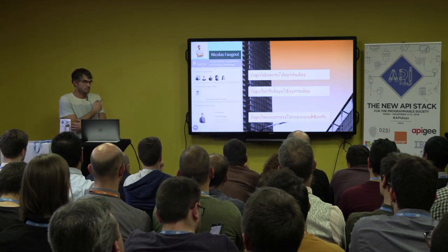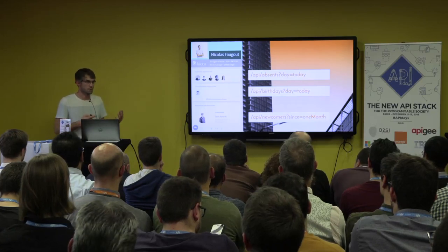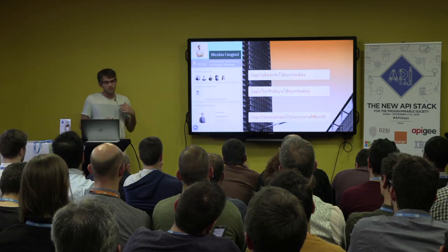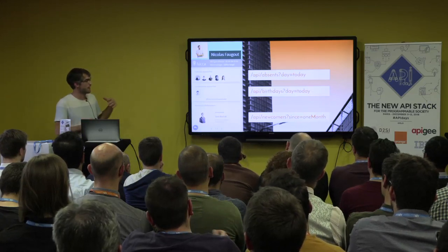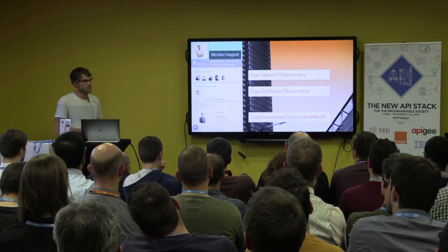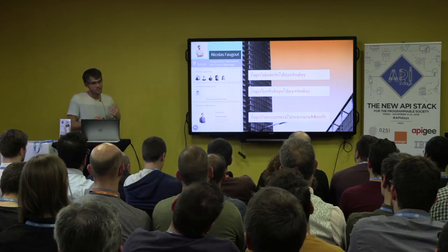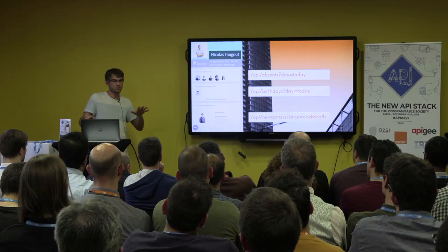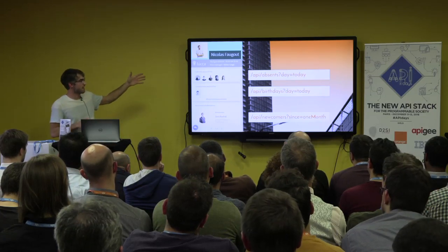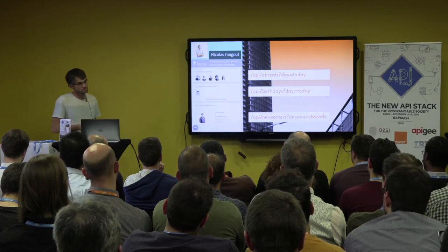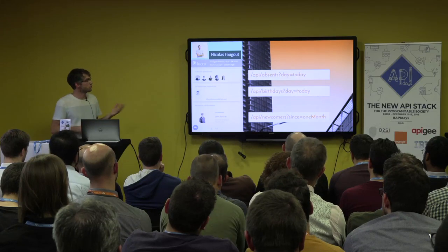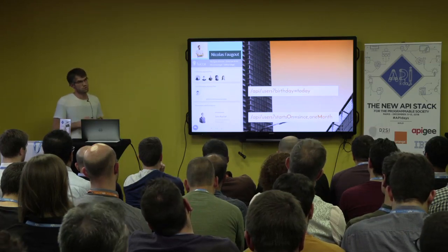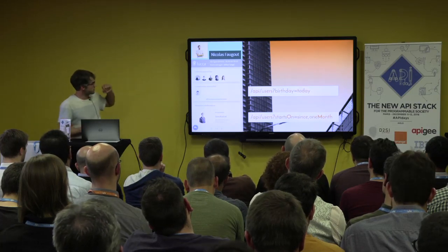These APIs are composite because they hide the concept of an employee or user — depending on your ubiquitous language. With three APIs like this, you can personalize each, optimize, and make use of HTTP caching since this information won't change during the day. But there is something more important: architecture, good design, and security. What if your company is split into two legal entities and people cannot see each other? Will the developer of these APIs handle that? We don't know. The equivalent in terms of primitives would be a user API — for birthdays and newcomers, it's easy because they correspond to direct properties of the user's state.